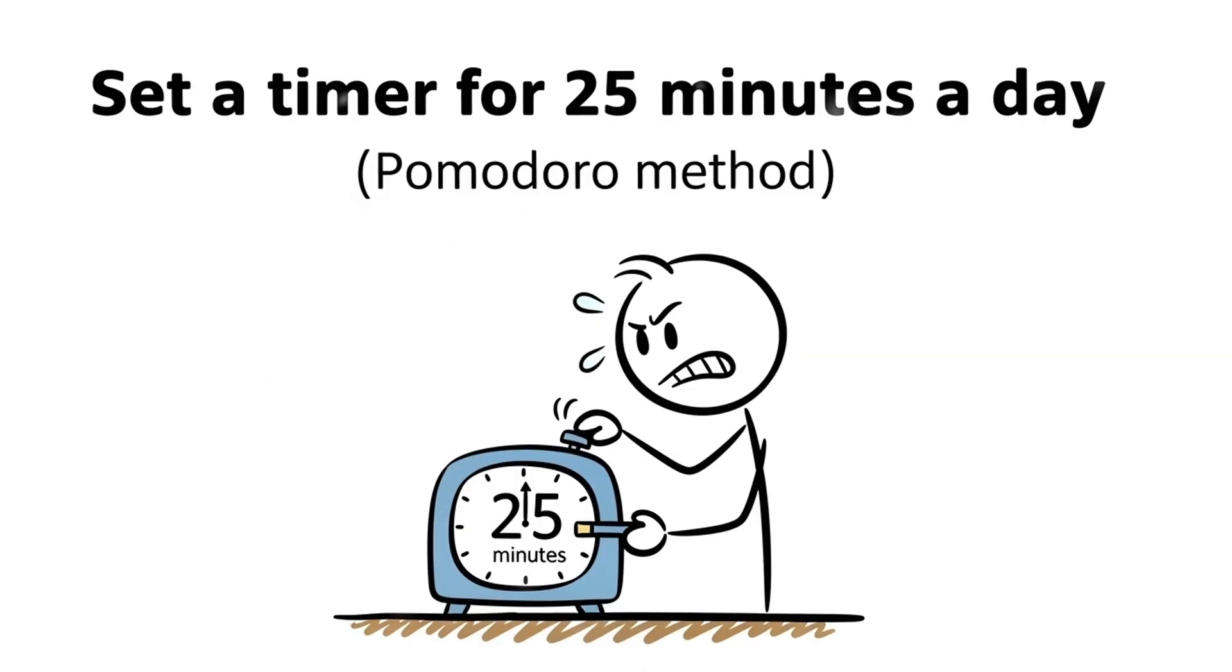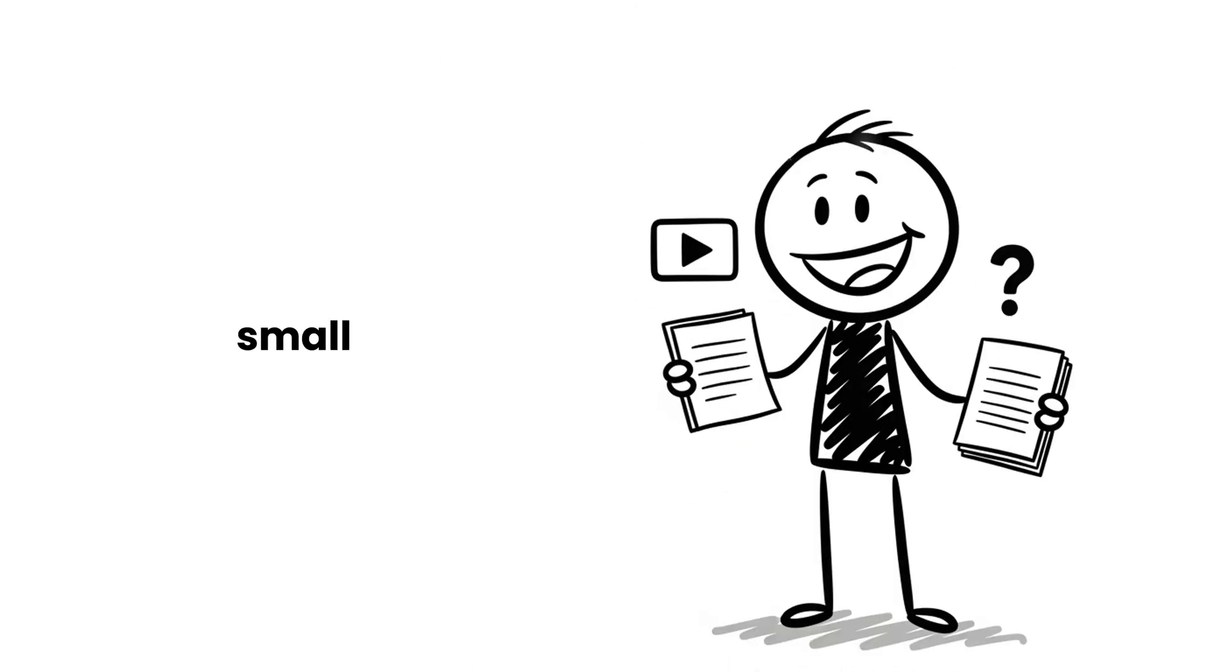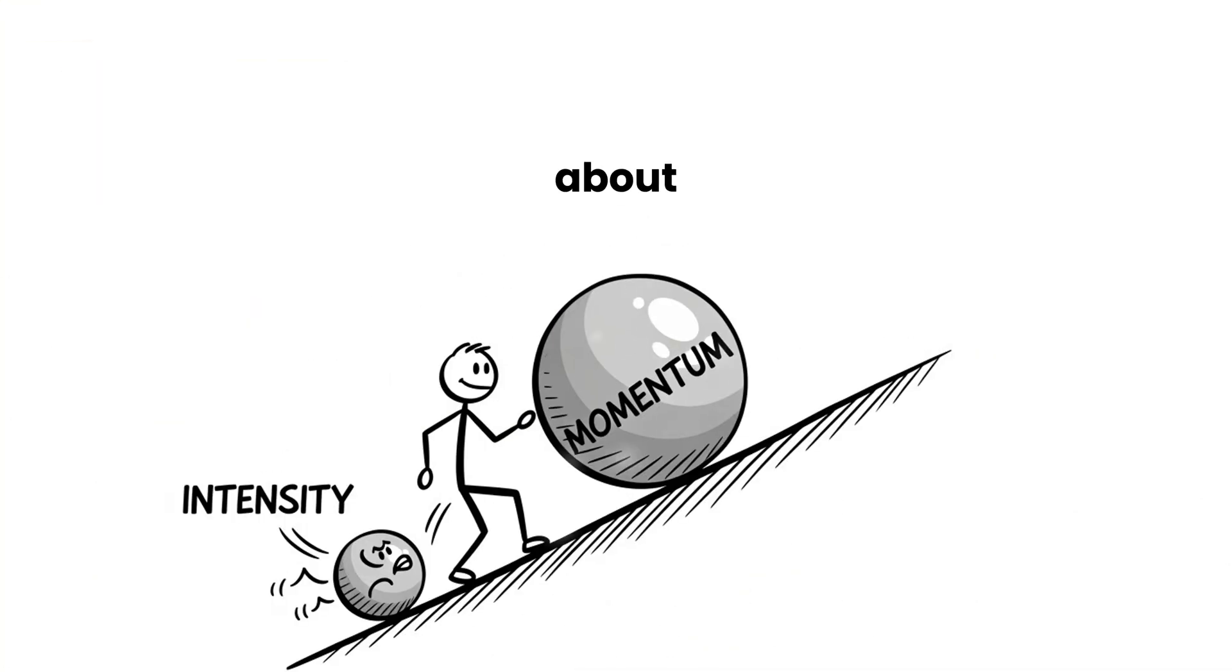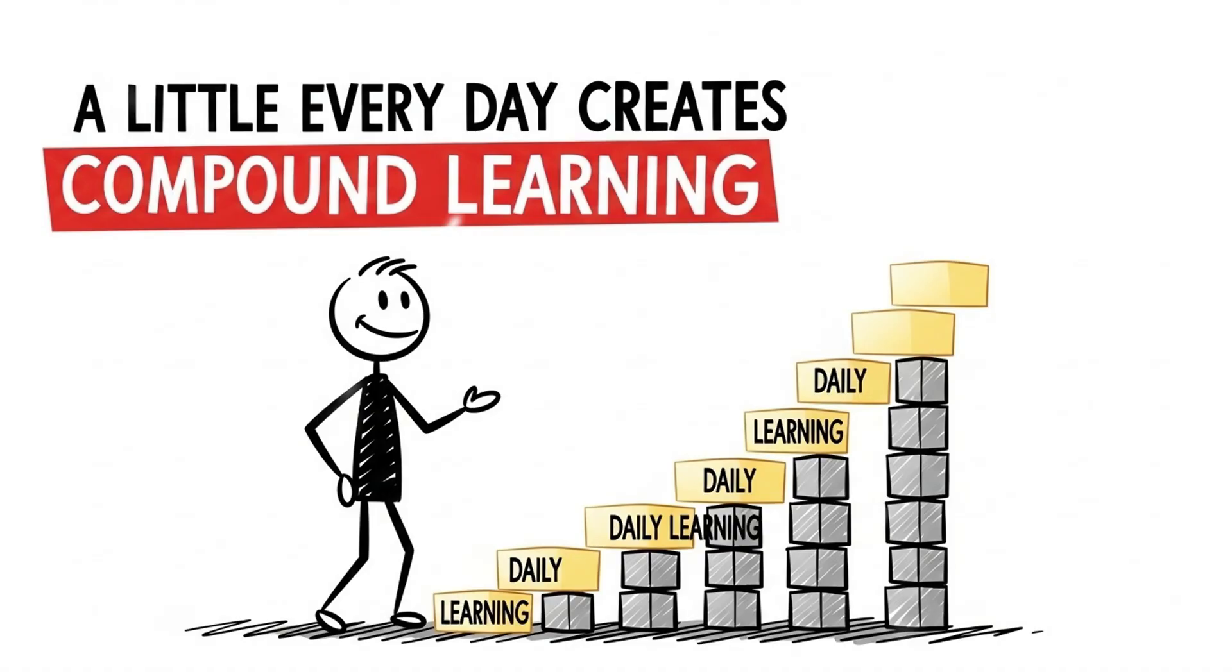Application tip: Set a timer for 25 minutes a day (Pomodoro method). Start small—one page, one video, one question—and build from there. Track your progress with a calendar or habit tracker. The key: Progress isn't about intensity, it's about momentum. A little every day creates compound learning.